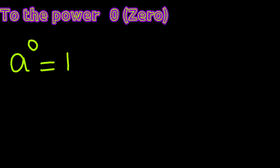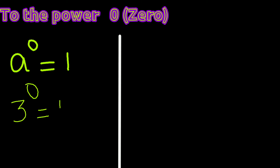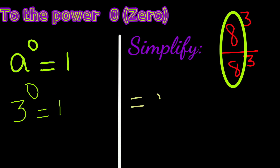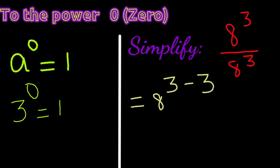The next law is about the power of 0. Any value to the power 0 is 1. For example, a to the power 0 equals 1, and 3 to the power 0 equals 1. To verify: 8 to the power 3 divided by 8 to the power 3 — subtracting the powers gives 8 to the power 3 minus 3, which is 8 to the power 0. Since anything to the power 0 is 1, we have the value as 1.